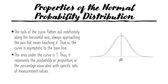The fifth property: the tails of the curve flatten out indefinitely along the horizontal axis — that is, the x-axis — always approaching the axis but never touching it. At some point, the curve becomes parallel to the horizontal axis, so there is no point of intersection between the curve and the horizontal axis.